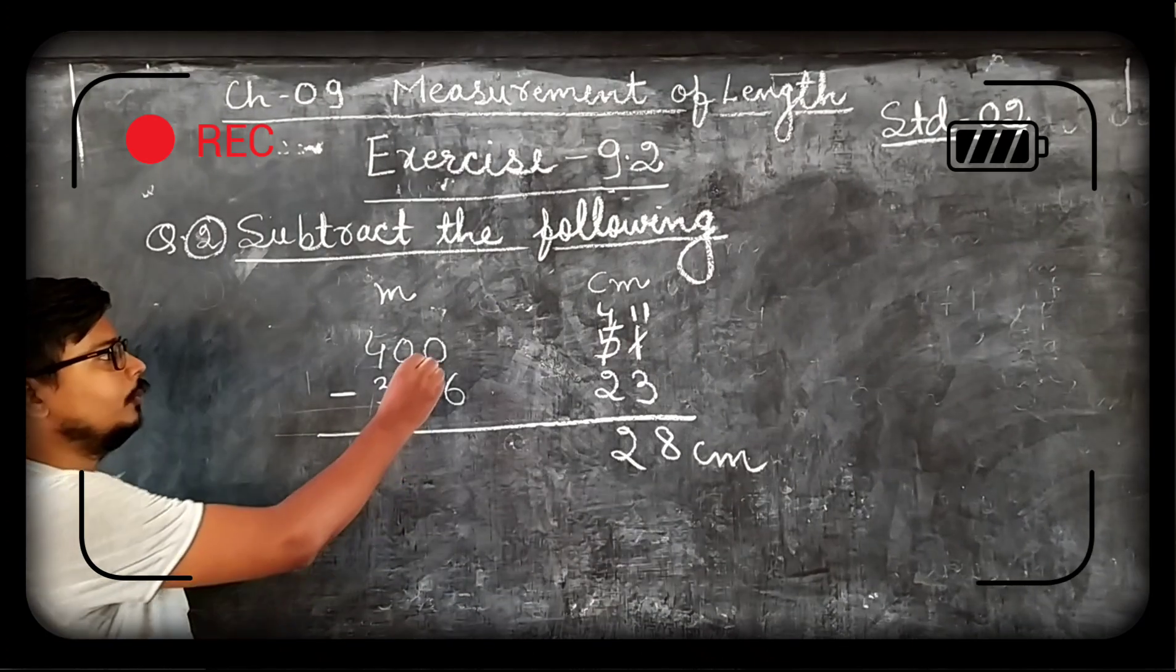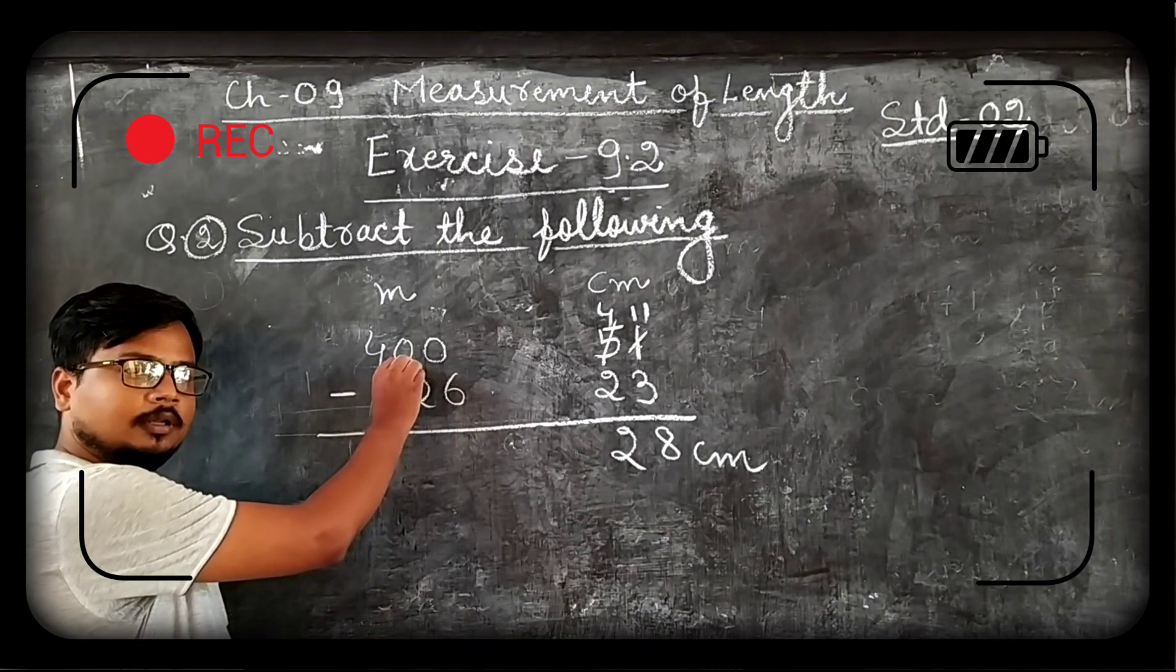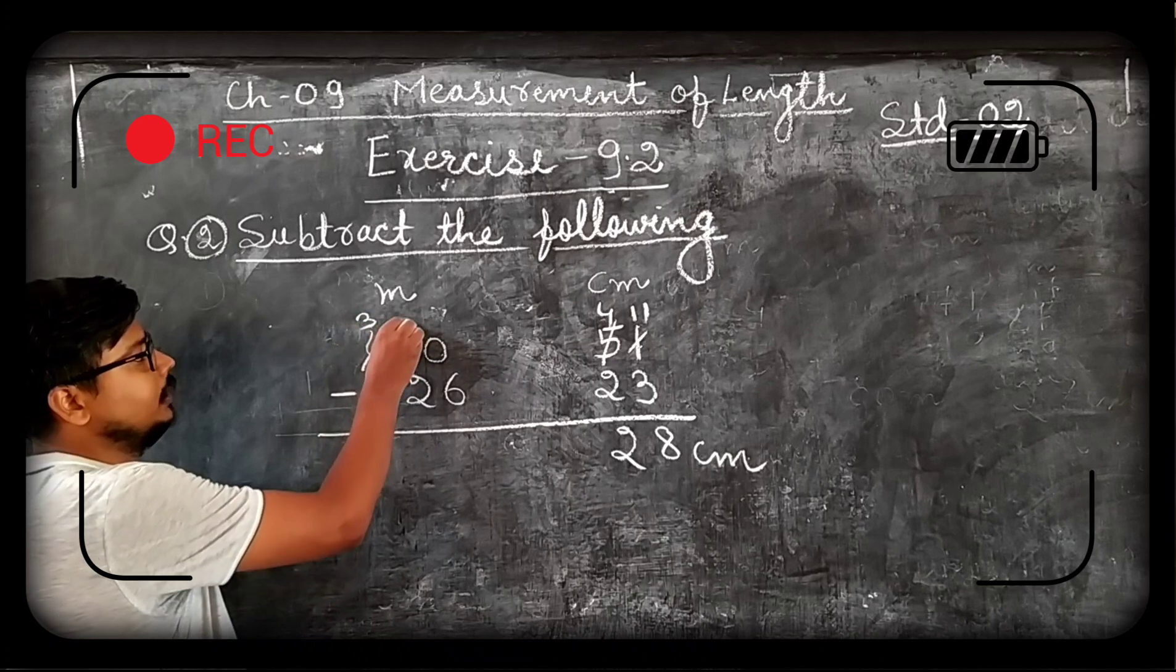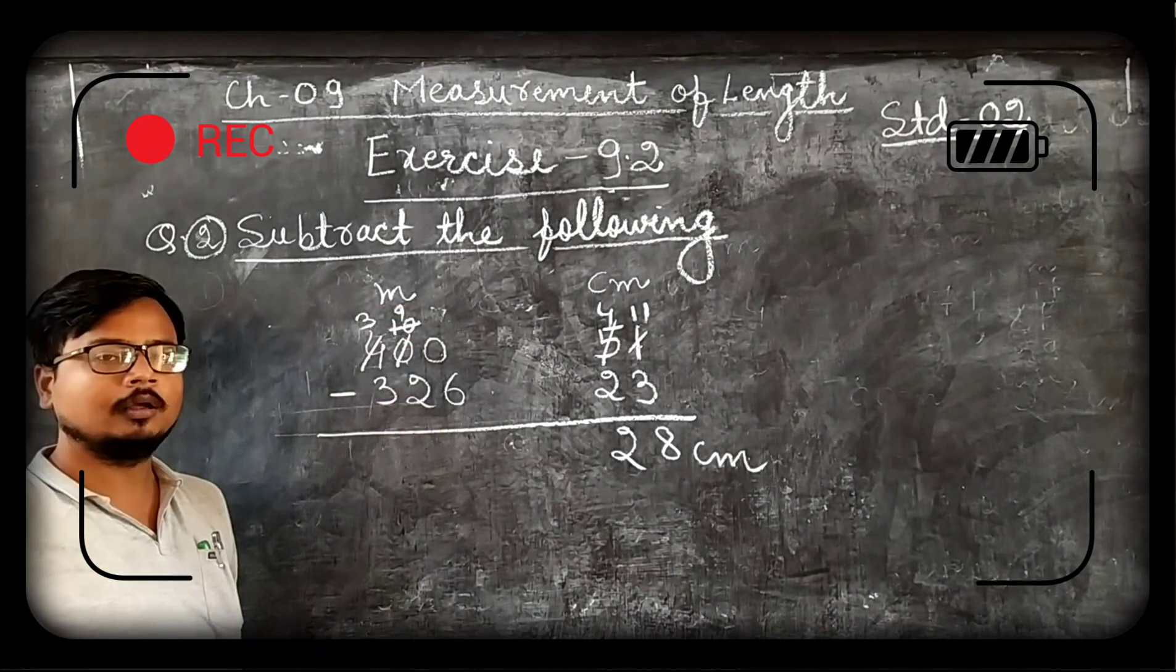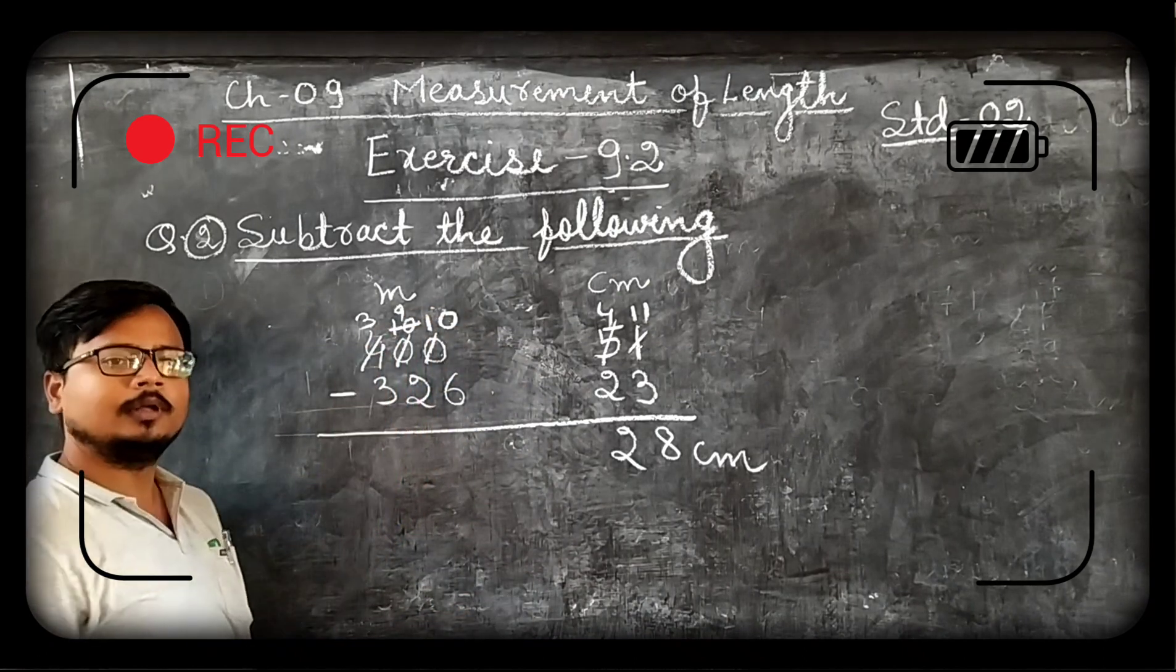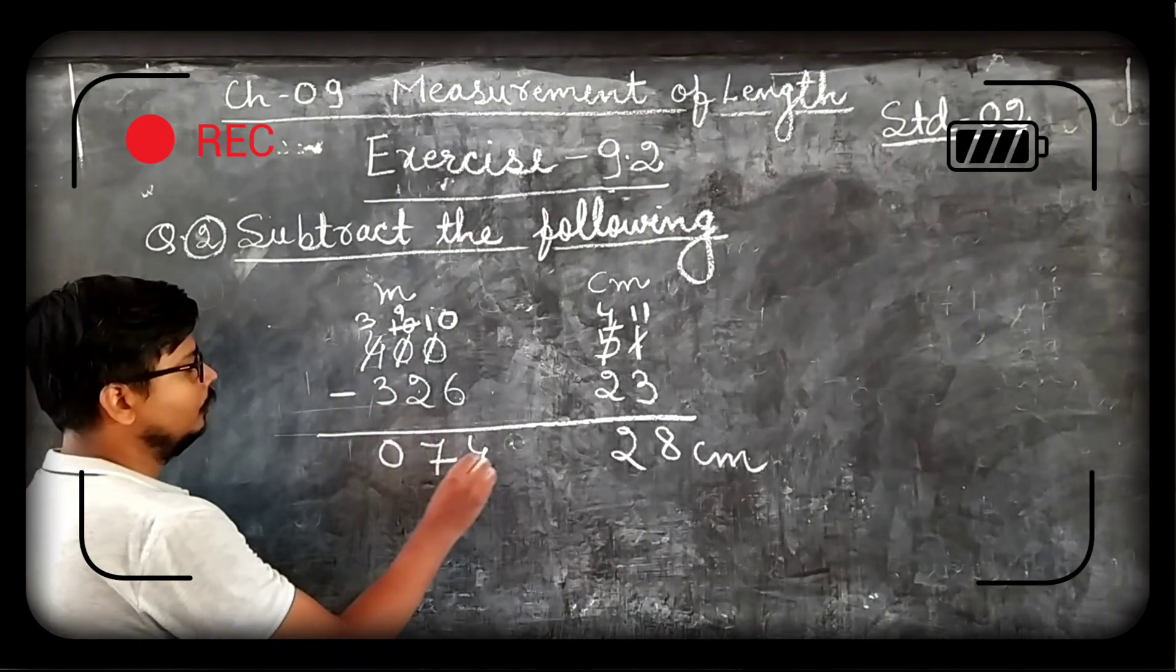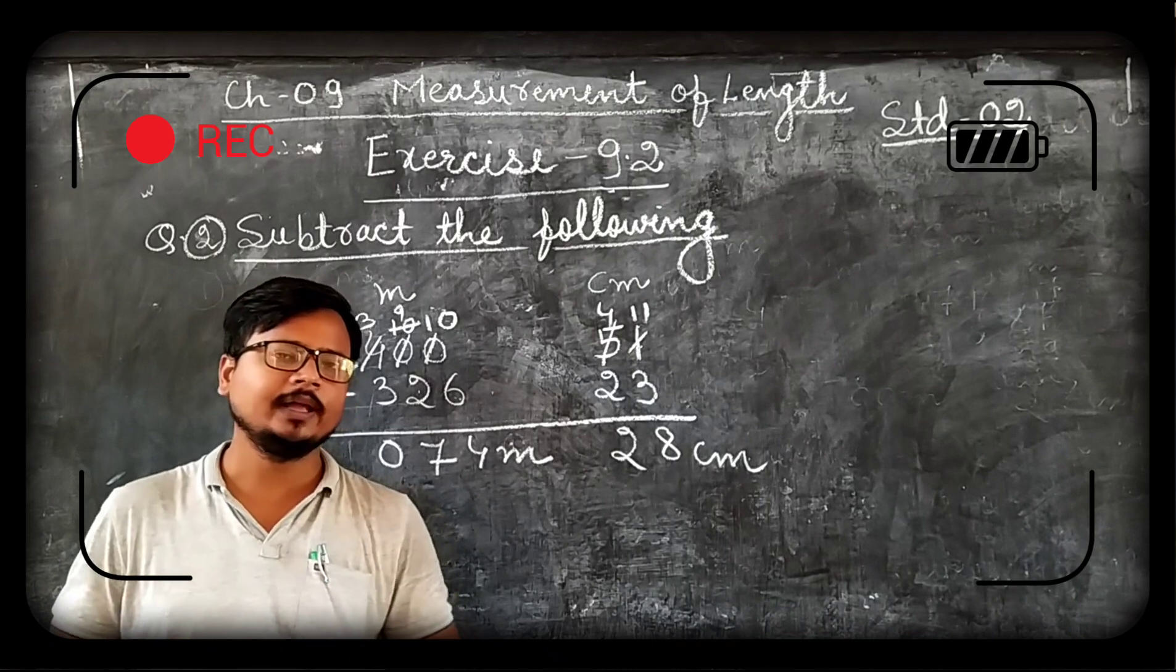Now come to next one. From 0 we cannot subtract 6. Let us take carry. Here is also 0 given. It is also 0. So we cannot carry from this 0 also. We will carry from this 4. This 4 becomes 3 and this 0 becomes 10. Now we can subtract 6 from 10. 10 minus 6 is 4. 9 minus 2 is 7. And 3 minus 3 is 0. So our answer becomes 74 meter 28 centimeter. So students in this way you have to solve.